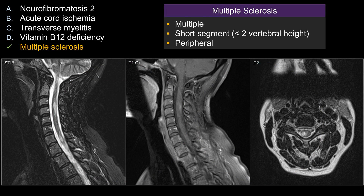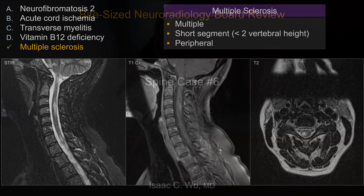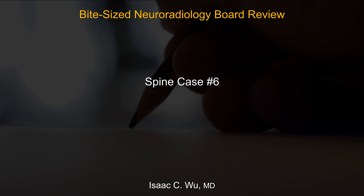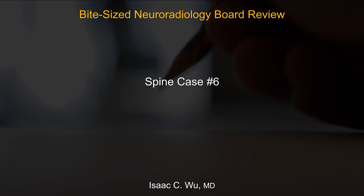As a generalization for multiple sclerosis for board exam purposes, they should show you multiple cord lesions that are short-segmented and peripheral in location. This is a classic example of an MS lesion. That's all for this spine case number six.